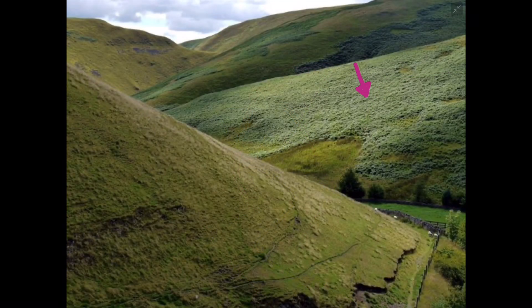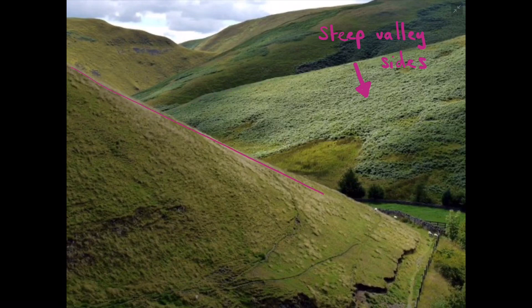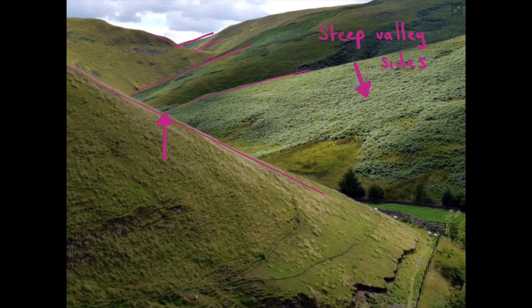To visually see what this landform looks like in photographs, which examiners could provide for you to label, as you can see on the screen that I'm doing now, we have interlocking spurs in this photograph showing those steep valley sides. I know it's an interlocking spur because I can see each valley side crisscrossing past one another, as I've indicated on these lines.